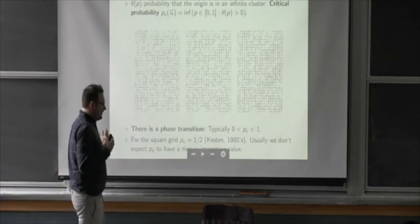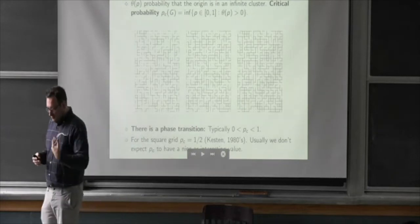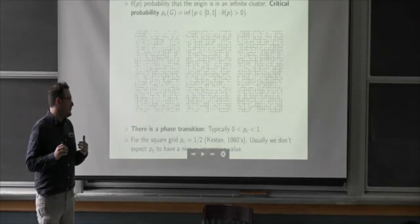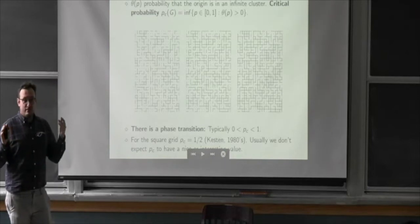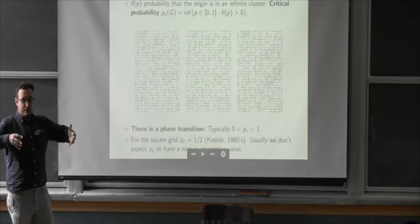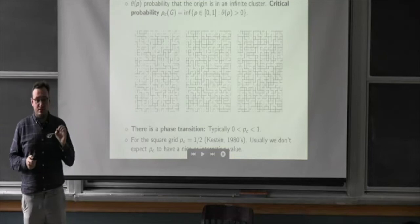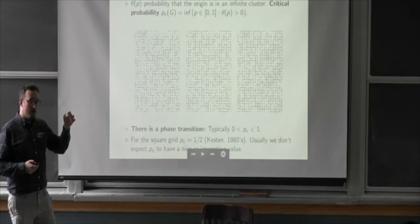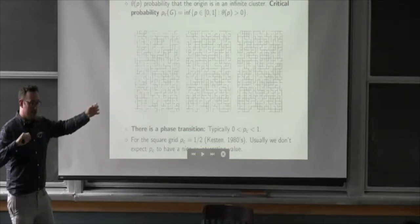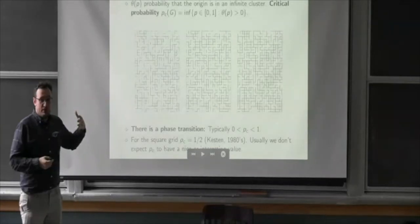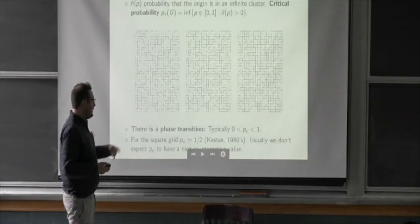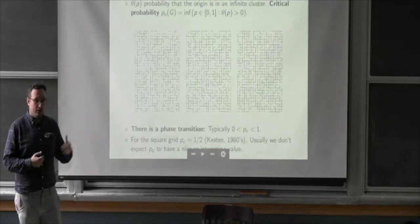The interesting thing about this model is that it does undergo a phase transition, at least when you're not one-dimensional. For most infinite graphs that aren't one-dimensional, you see a phase transition: PC is strictly between zero and one. PC, the critical probability, is defined to be the infimal value of p where the probability that the origin belongs to an infinite cluster is positive. When you're below PC, there are no infinite clusters; when you're above PC, there is an infinite cluster almost surely. This existence of an infinite cluster is always a zero-one event by Kolmogorov's zero-one law.